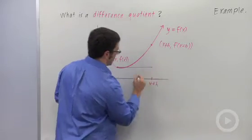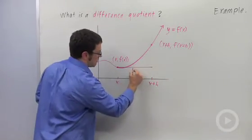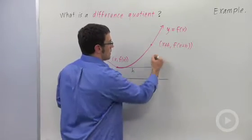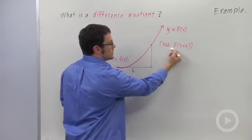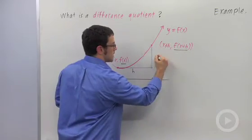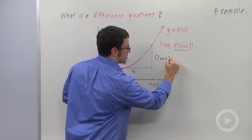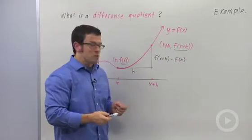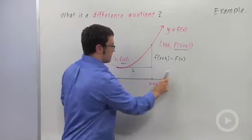Now, this distance here is just going to be h, right? The horizontal distance between x and x plus h. This distance will be the difference in the y values f of x plus h and f of x. That's f of x plus h minus f of x. Now, a difference quotient is this thing divided by this.